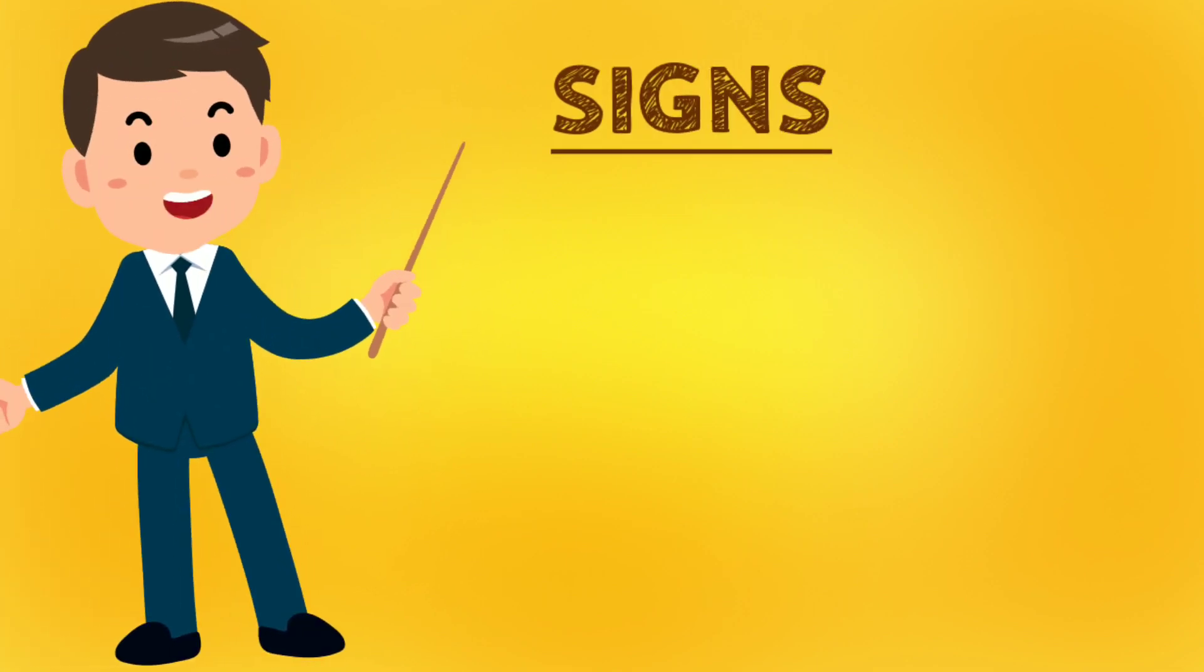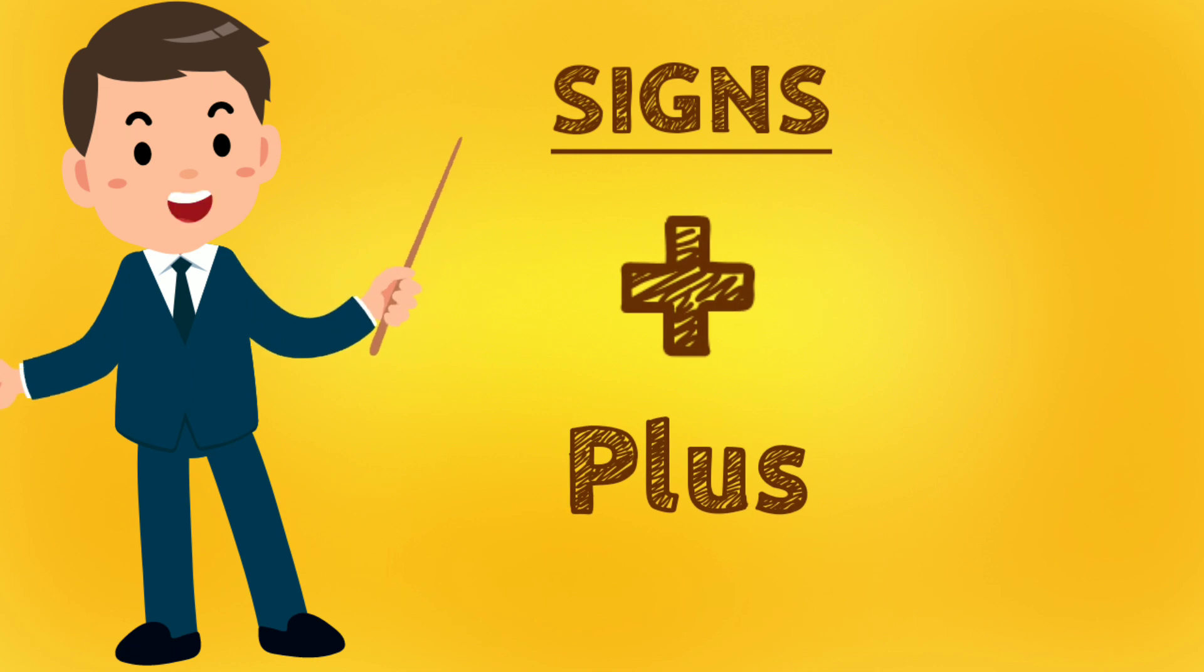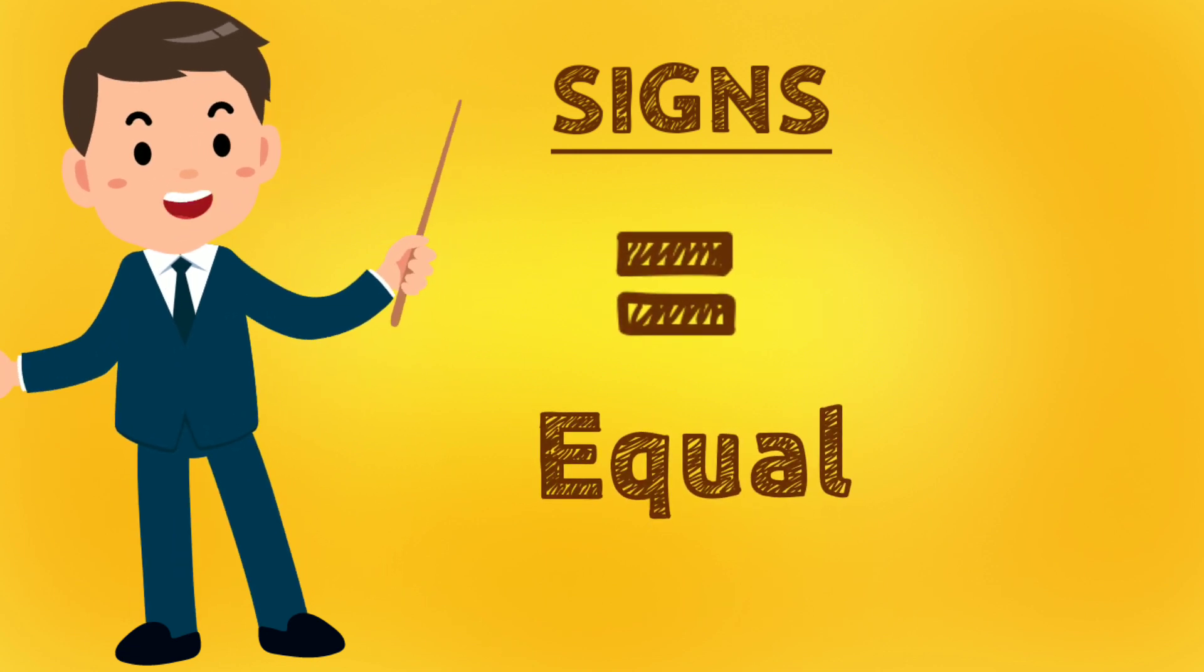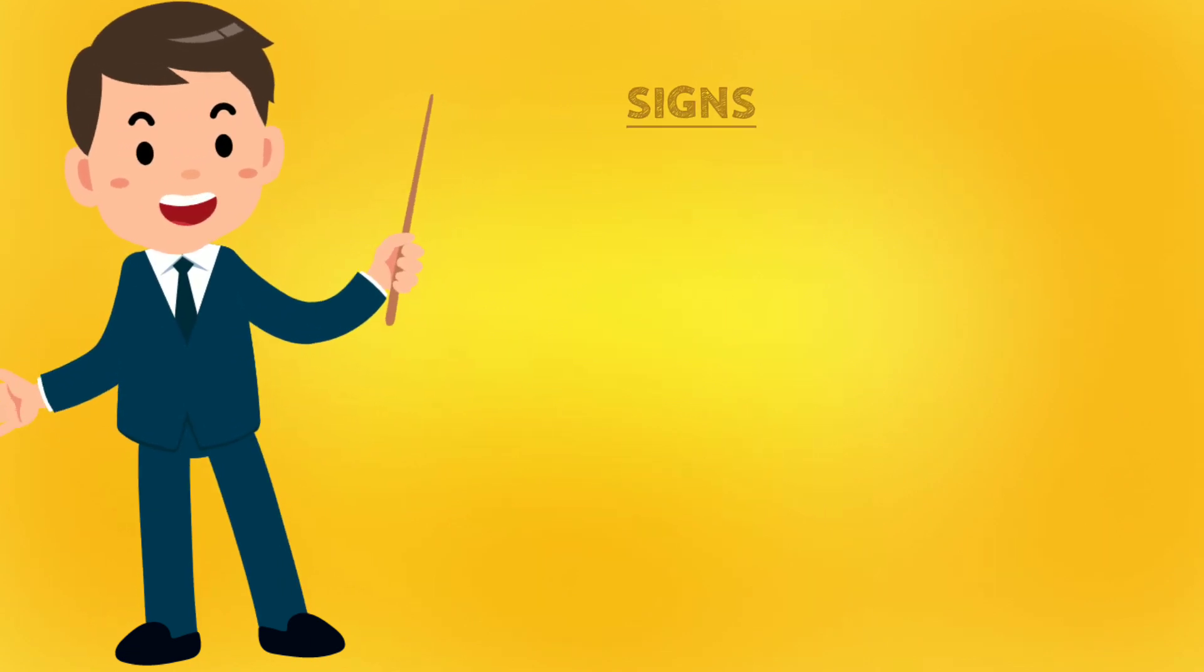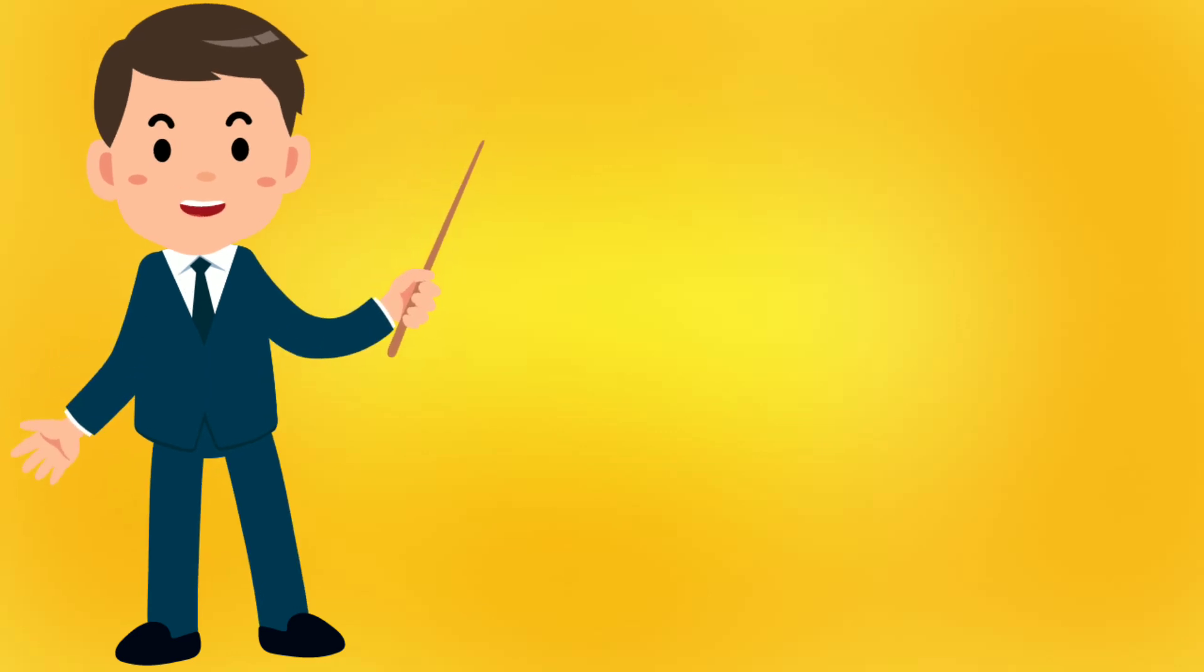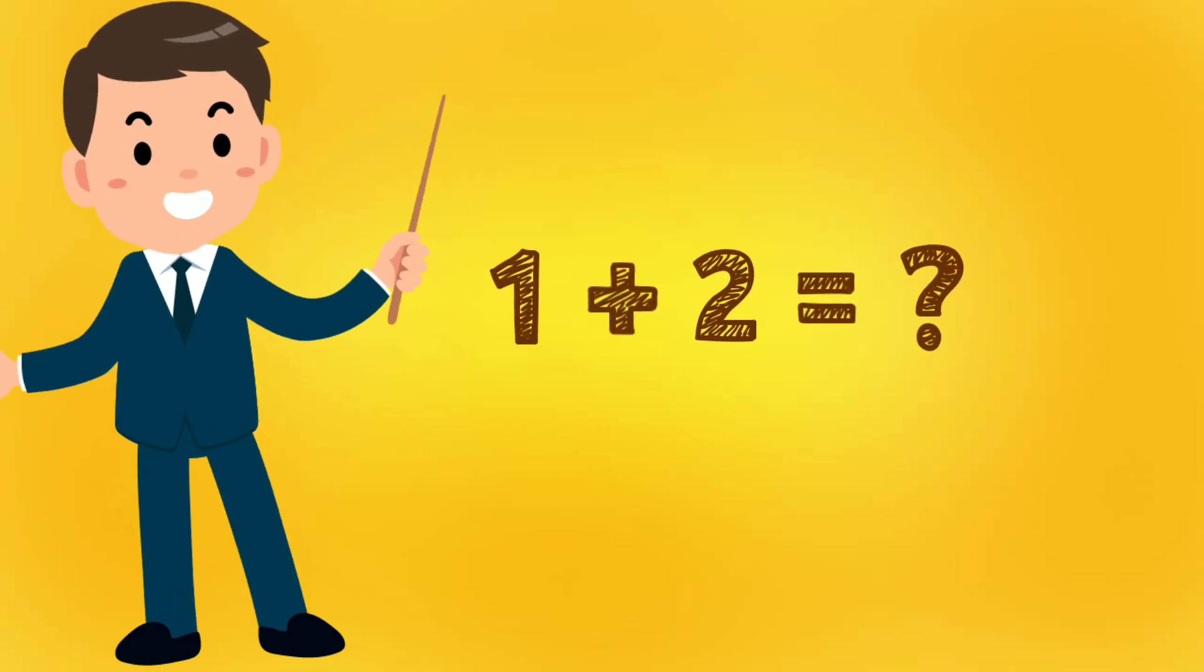The most important sign is plus. It's a symbol that indicates to add. The next sign is equal. The equal sign is placed to show the result of the counting. Let's get started with the counting.